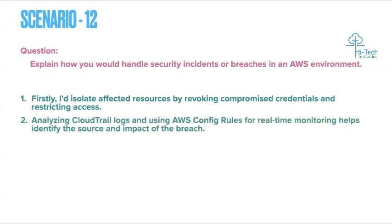Next, analyze CloudTrail logs and AWS Config for real-time monitoring to identify the source and how the impact occurred. By analyzing the logs and past history, we can come to a conclusion about why the issue occurred.